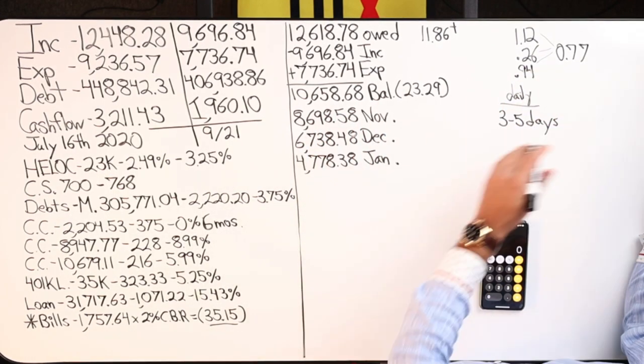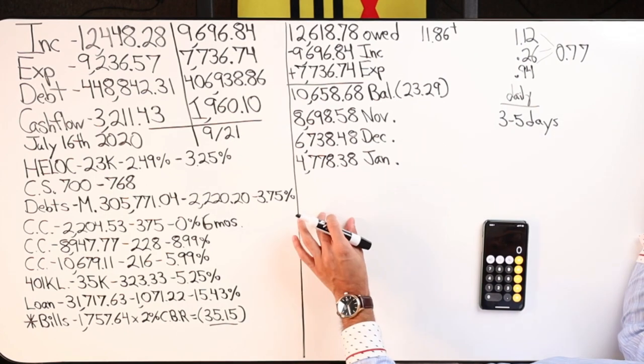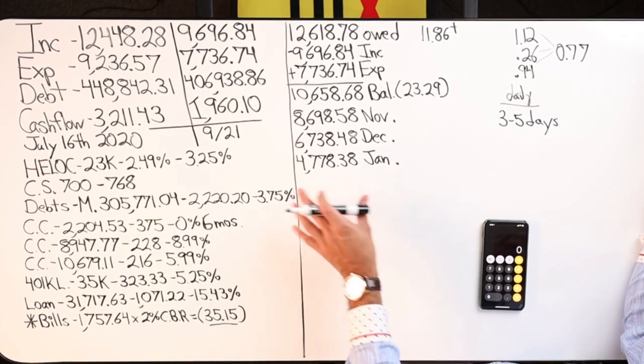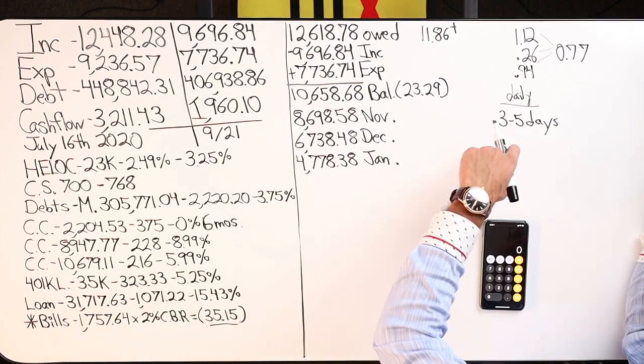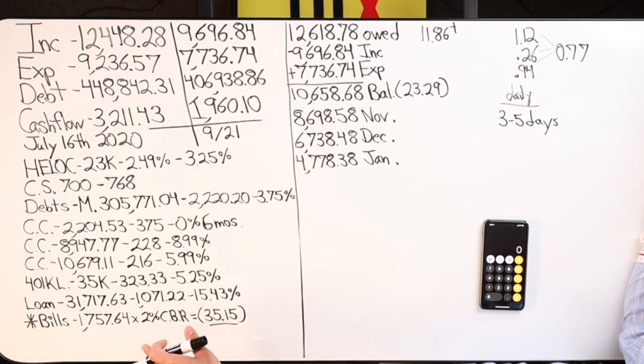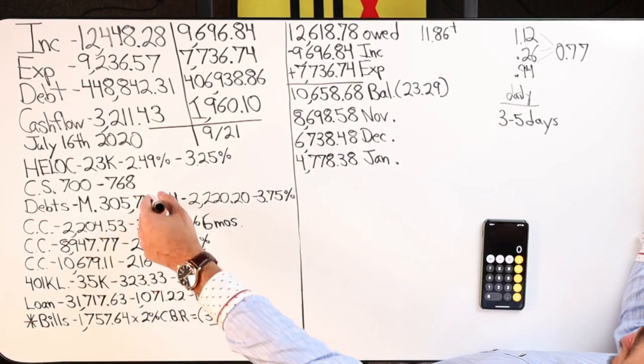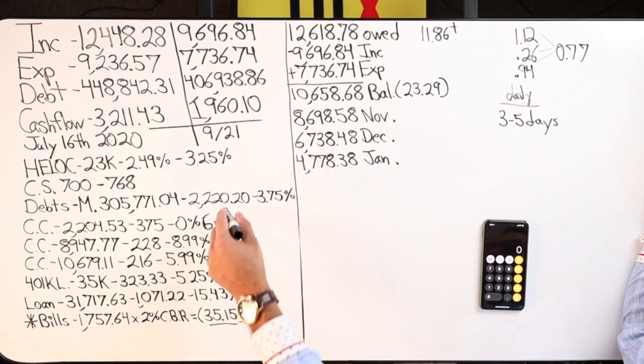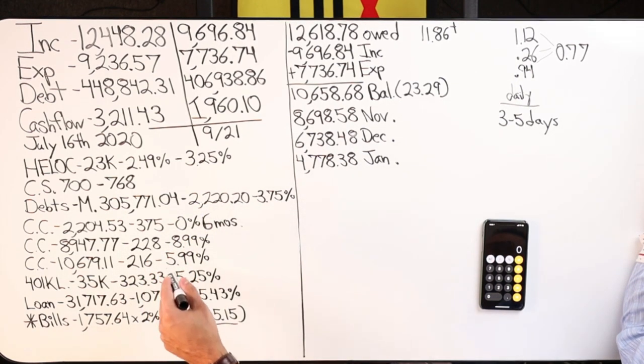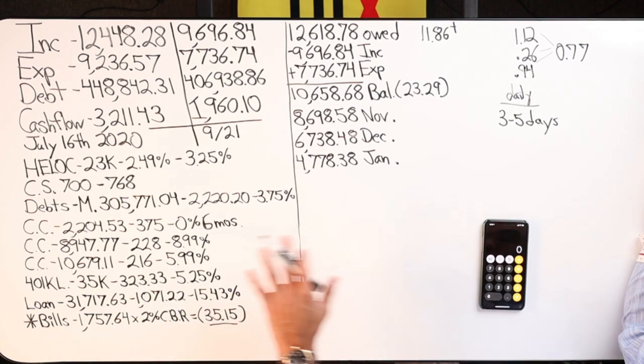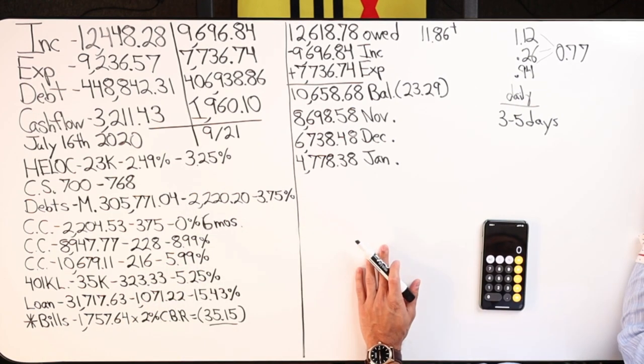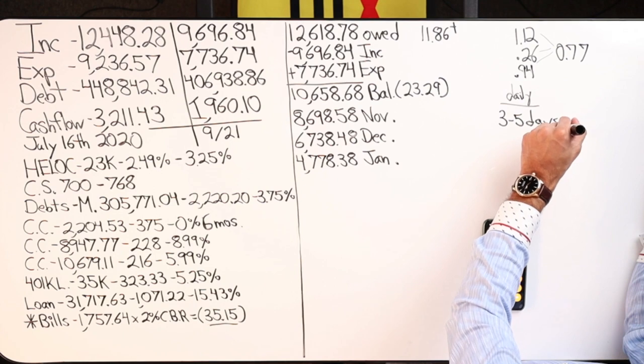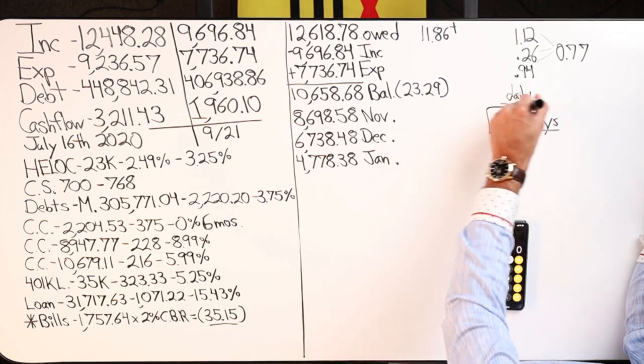Every three to five days, money would come out of the HELOC to cover bills and expenses that cannot be paid with a credit card. So all of these monthly payments cannot be paid with a credit card. The $2,000, $375, $228, $216, $323,000 bucks cannot be paid with a credit card.